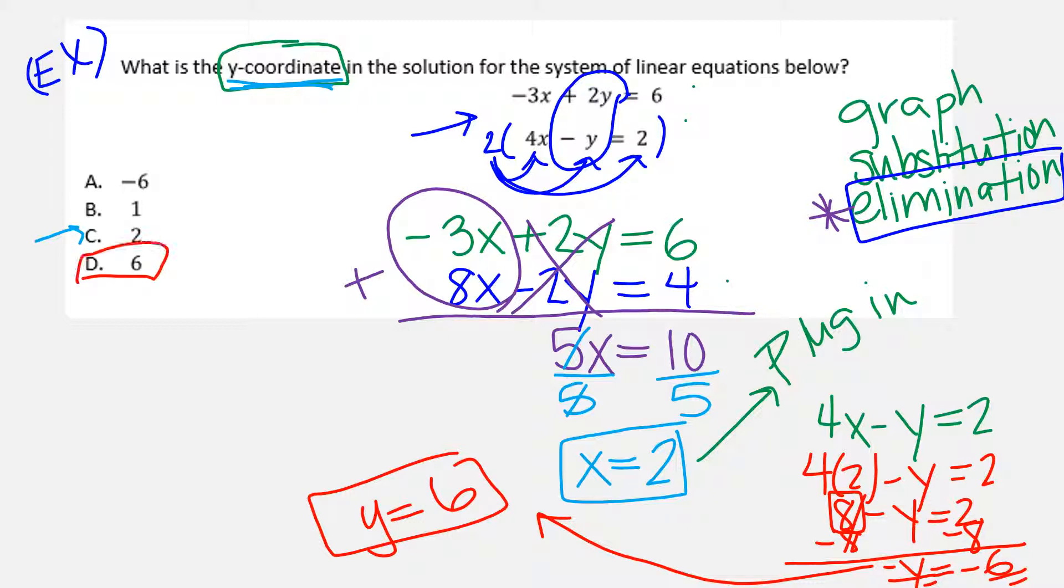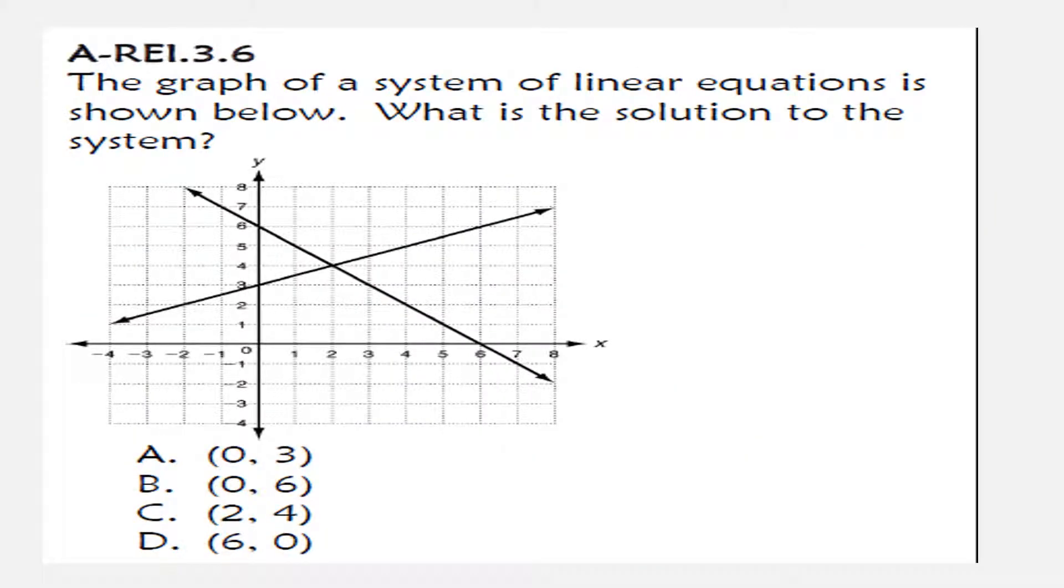Sometimes they might give you a simple question like this: the graph of a system of linear equations is shown below, what's the solution? Pick which solution you'd like. The solution is where they both intersect. Here, they're intersecting at two comma four.